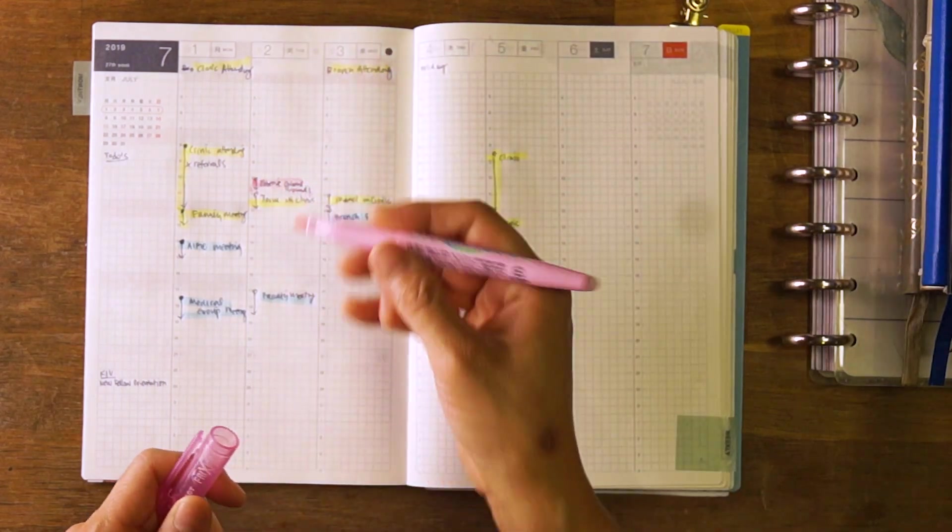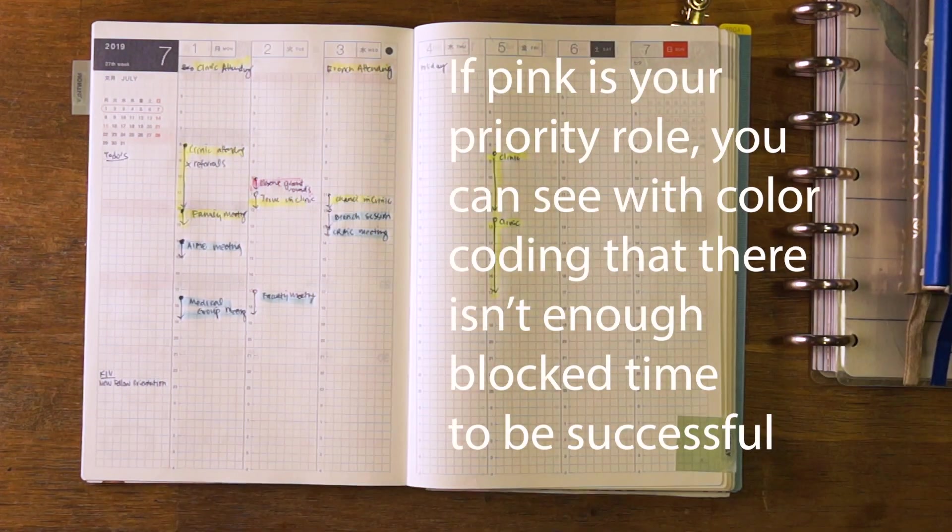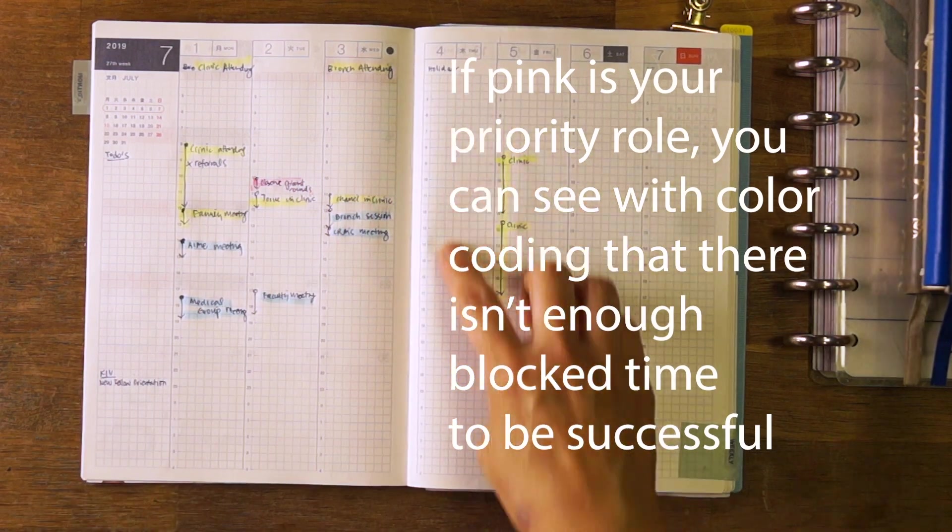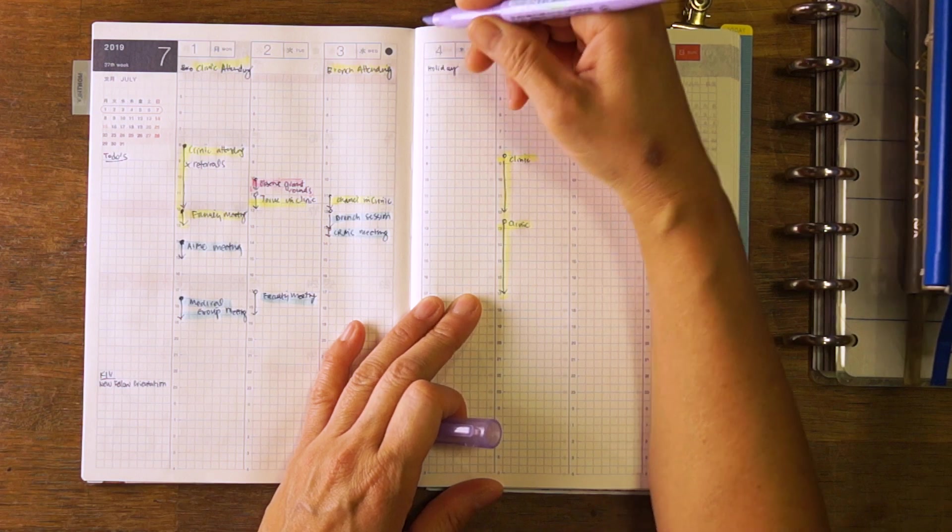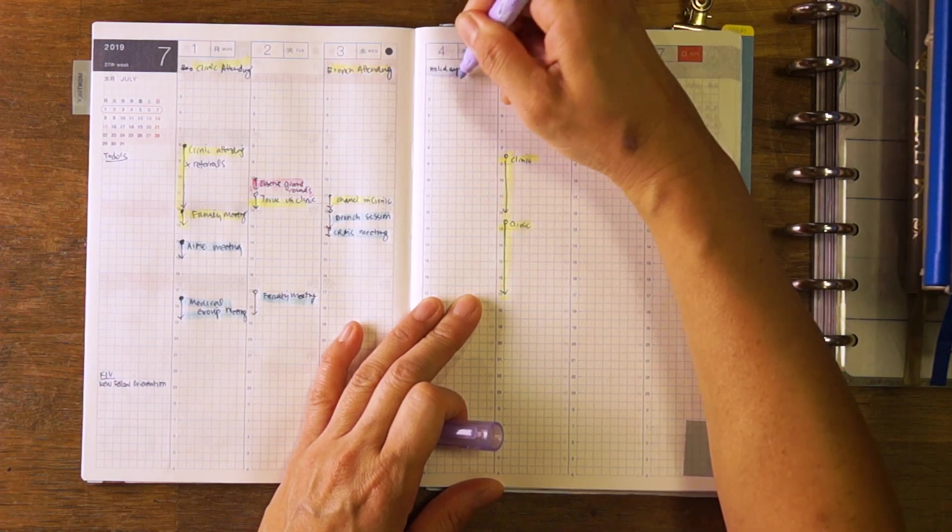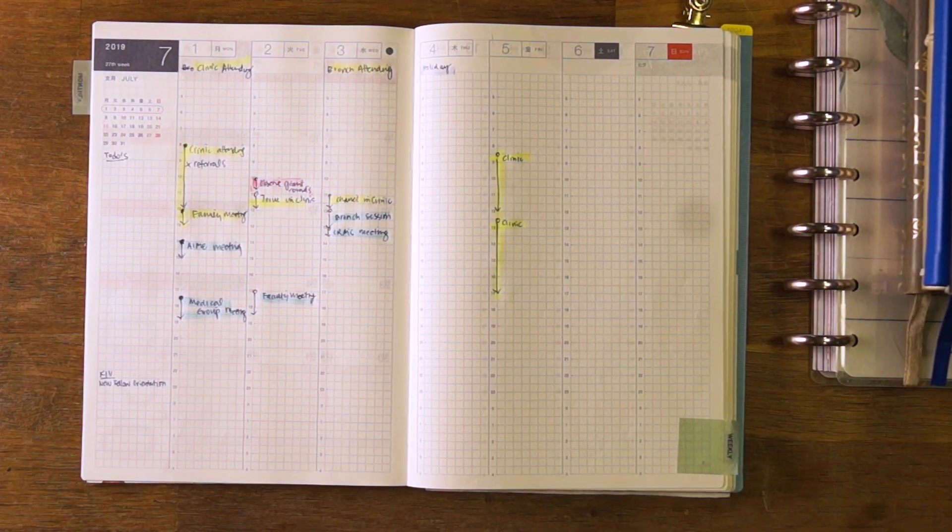Now technically, this highlighter is kind of running out of ink, which makes it kind of smeary. And then this one, I think this is going to be all personal day. I'm going to put that here. And then I still need to go over the events for the weekend.